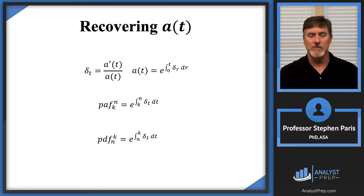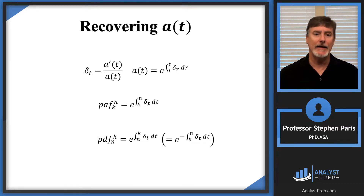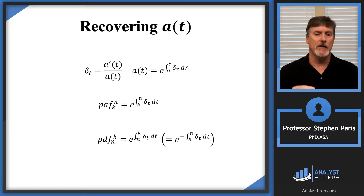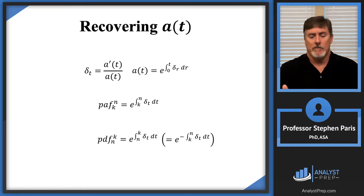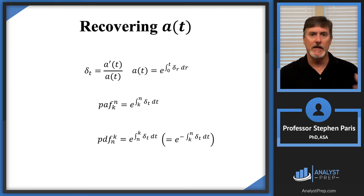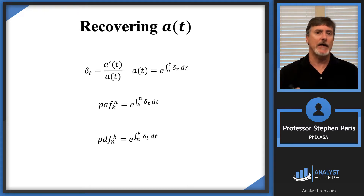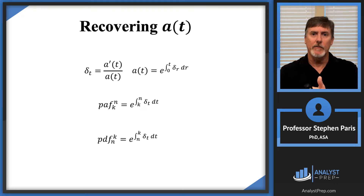Some study materials and even the SOA website rewrite the periodic discount factor as e raised to the minus integral from K to N of delta_t dt. That's true — the difference is interchanging the limits of integration. One of the properties of integrals is that the integral from A to B equals the negative of the integral from B to A. I don't particularly like that expression because you have to worry about when to put a minus sign in. I prefer to always integrate from where you're moving the money from to where you're moving the money to; that always becomes your exponent.